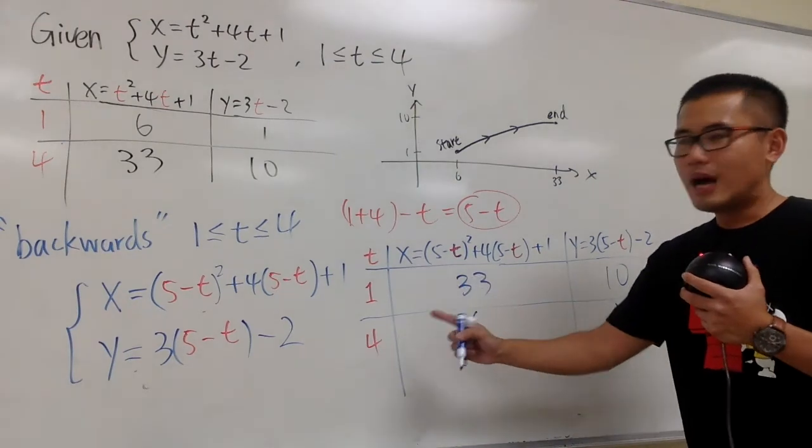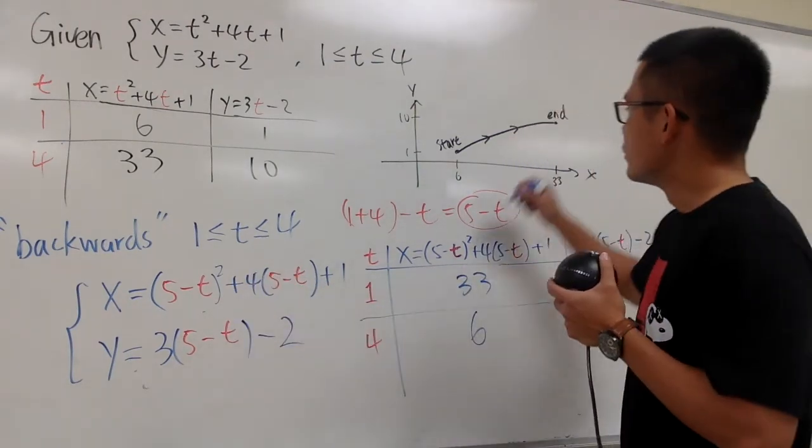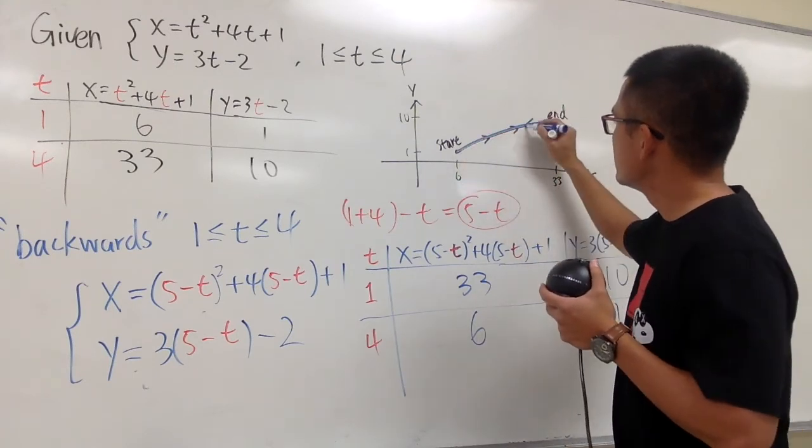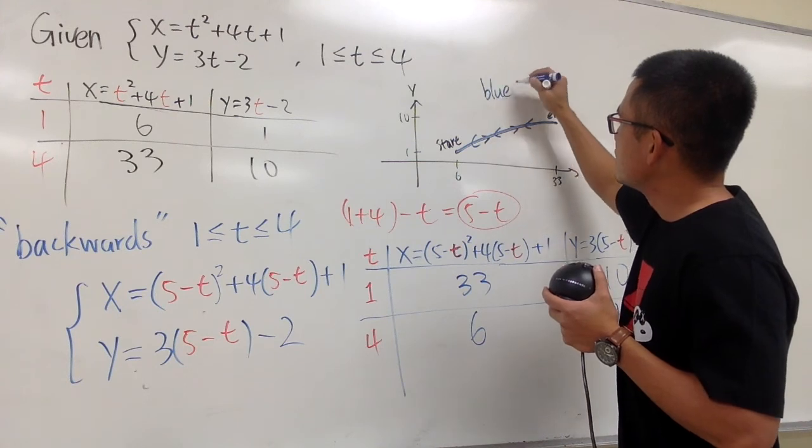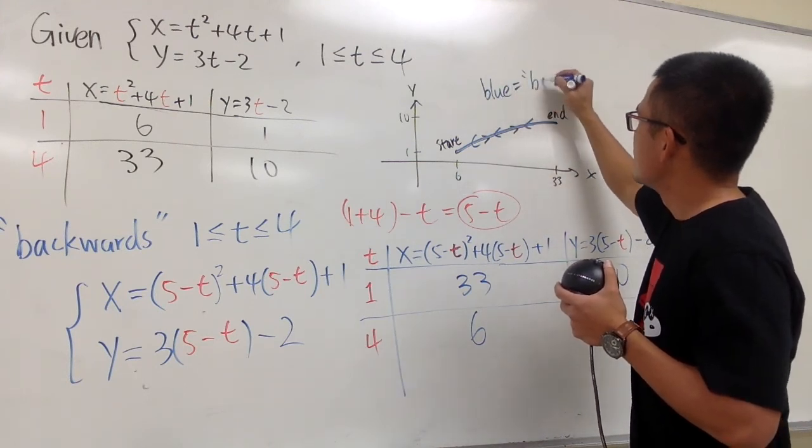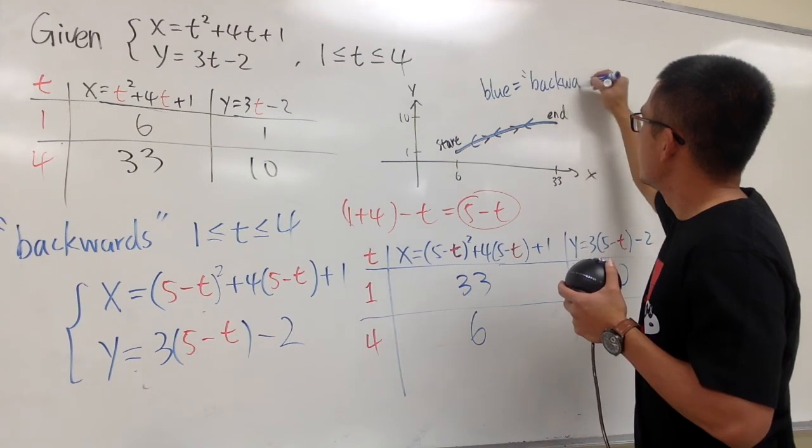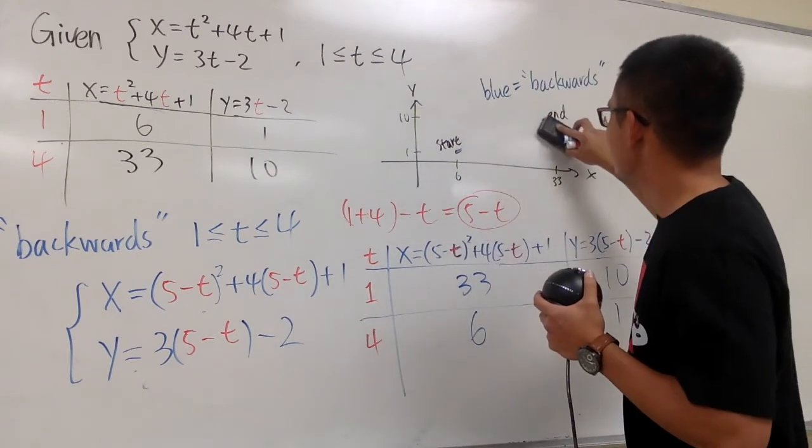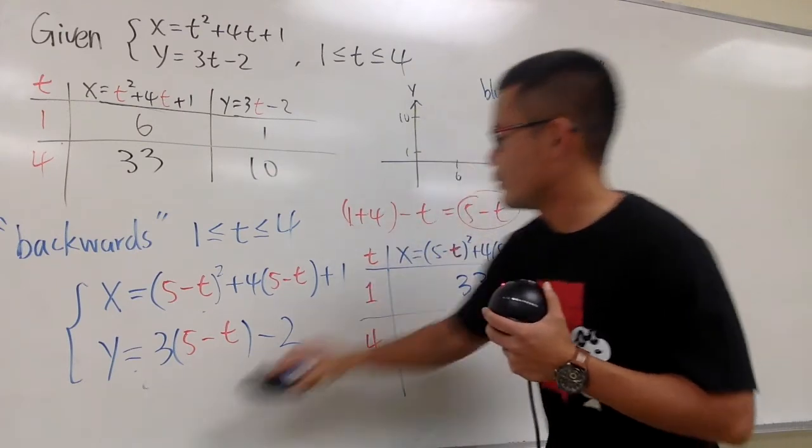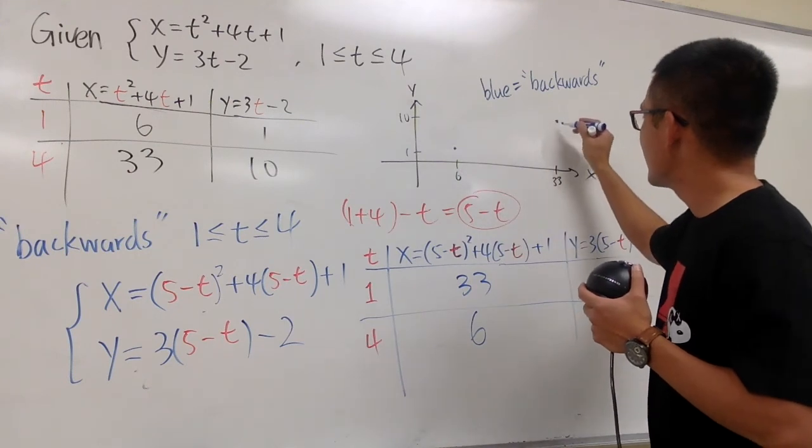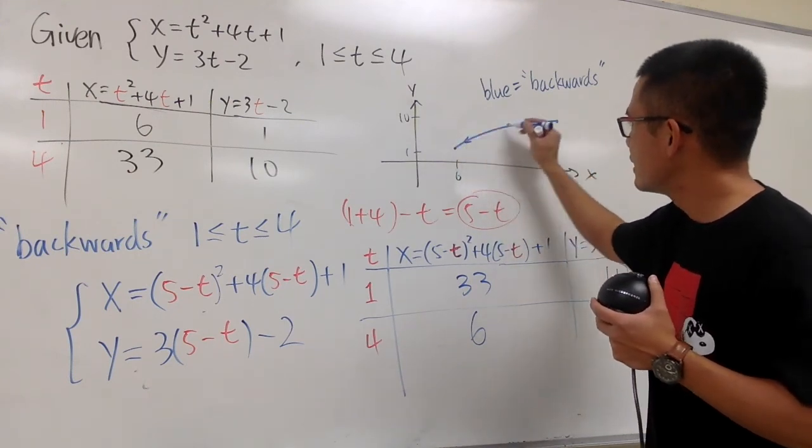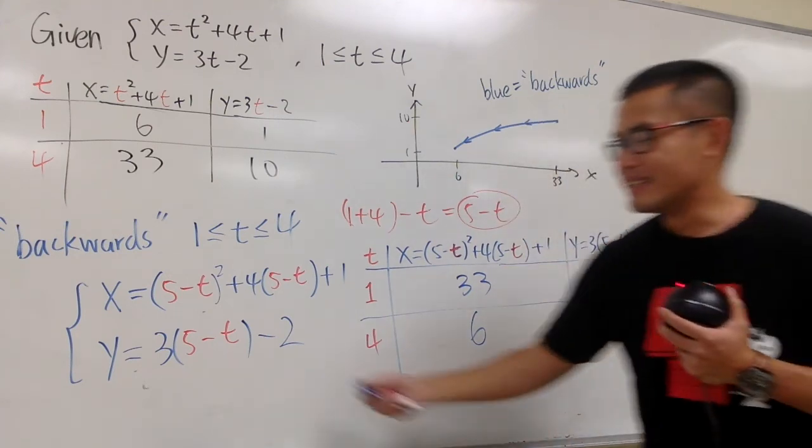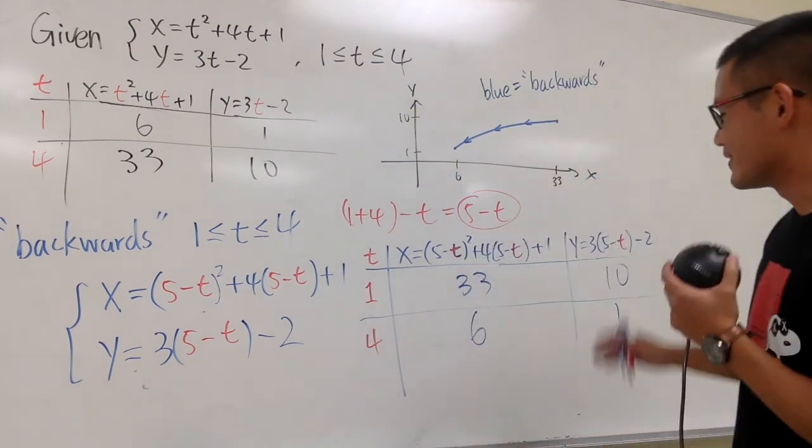So when you have this blue equation right here, you get to travel backwards. So I will just do it like this for you guys. So this is the blue right here is the backwards. For the blue one, I will go from here to that. Anyway, this is it. This is what I want to show you guys in this video. That's it.